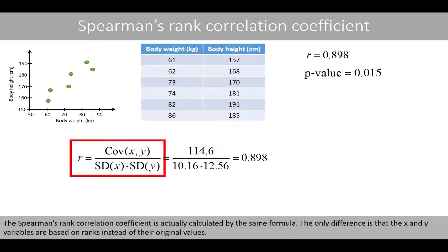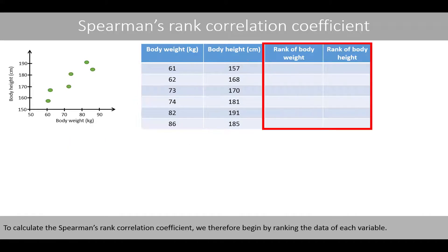The Spearman's rank correlation coefficient is actually calculated by the same formula. The only difference is that the x and y variables are based on ranks instead of their original values. To calculate the Spearman's rank correlation coefficient, we therefore begin by ranking the data of each variable.